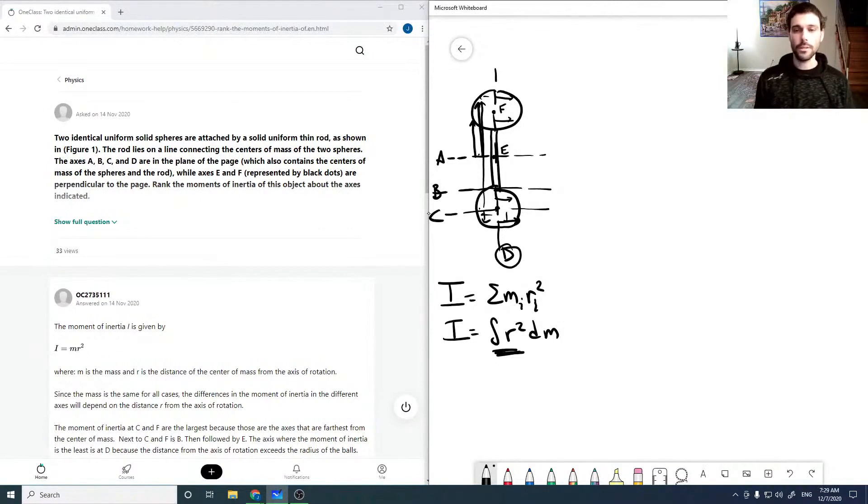Anything with large distances is going to contribute way more than say for the A axis, where you have the same amount of r's but they're all half as big as for C where you'd have half of them twice as large. So that means our C axis is going to be likely very large and probably our largest.